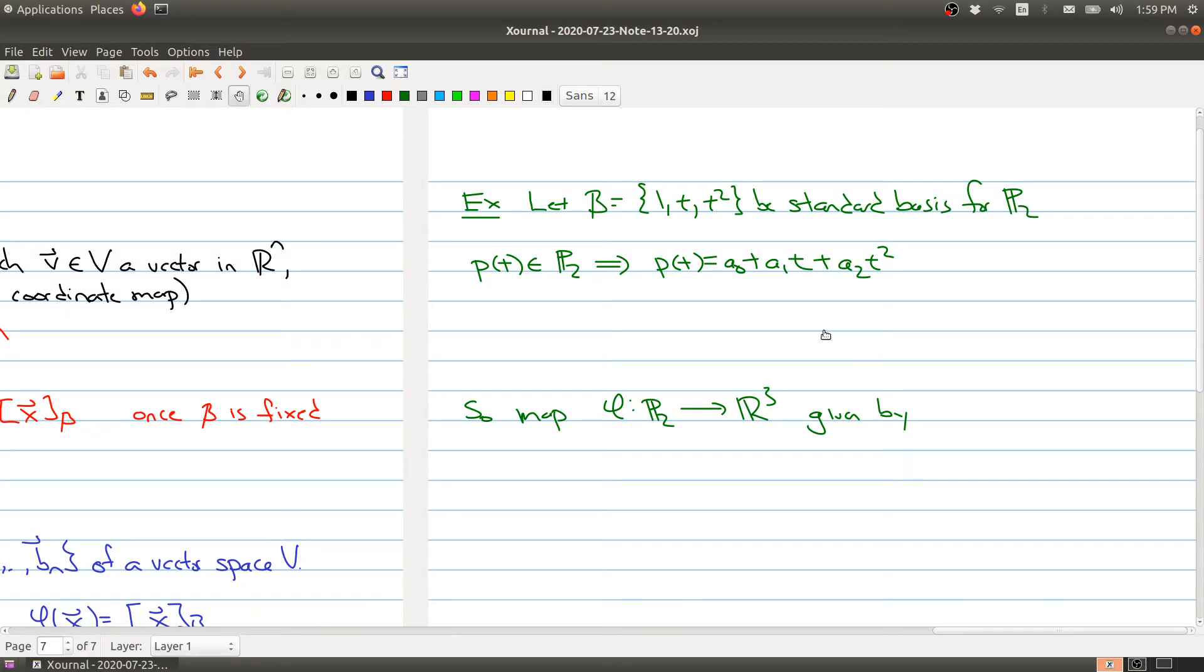So let me just give you an example. Here we have a basis for P2, and it's the standard basis: 1, t, and t squared. So whenever you take a polynomial inside of P2, it can be written as a0, a1t plus a2t squared. And with respect to this basis, notice that we can rewrite this as a0 times 1 plus a1 times t plus a2 times t squared. So these are the basis elements right here, and these are the scalars. So this implies that the b-coordinate of this polynomial is a0, a1, a2.